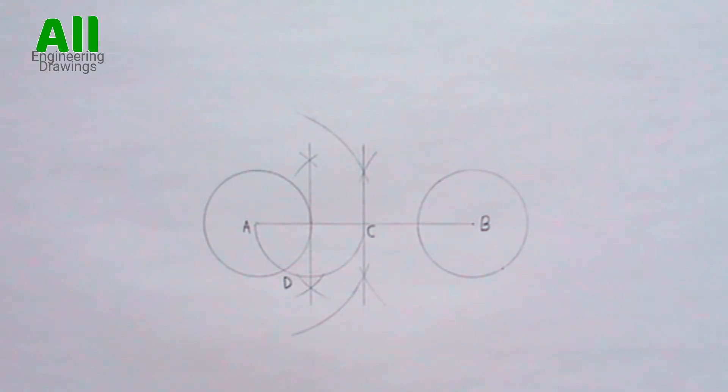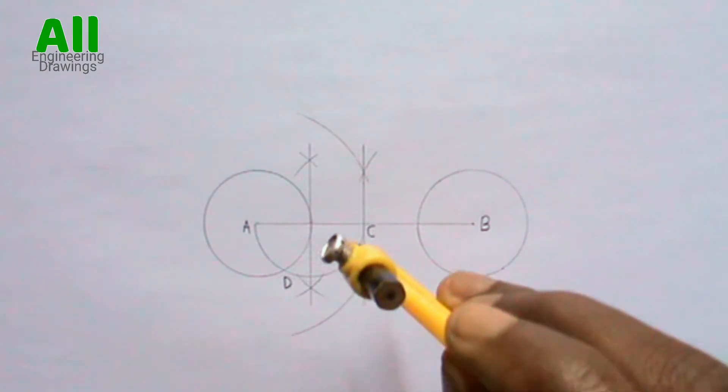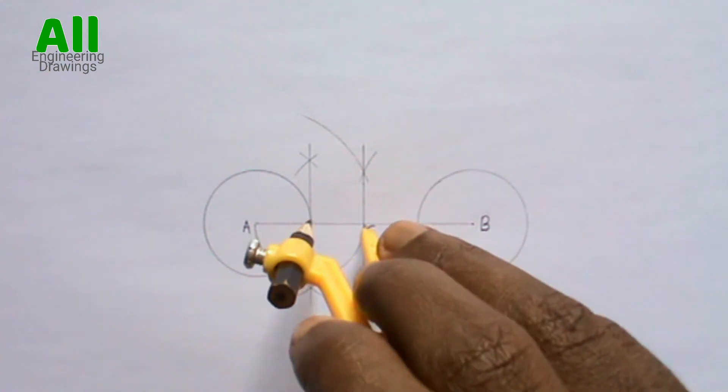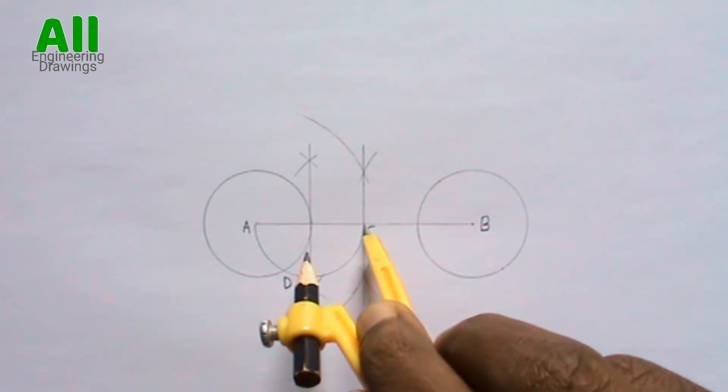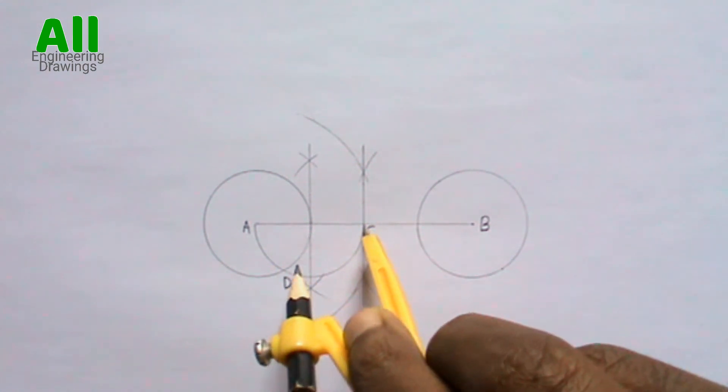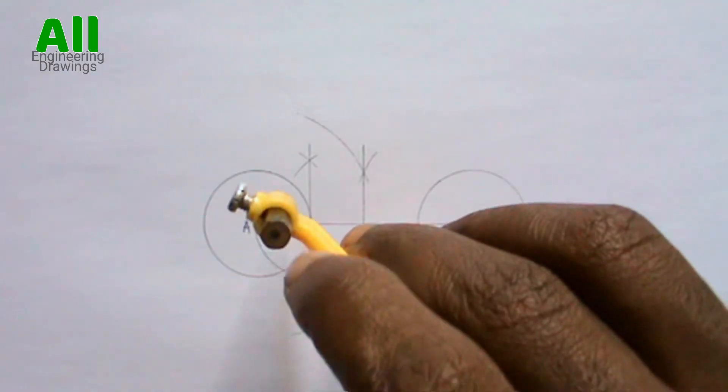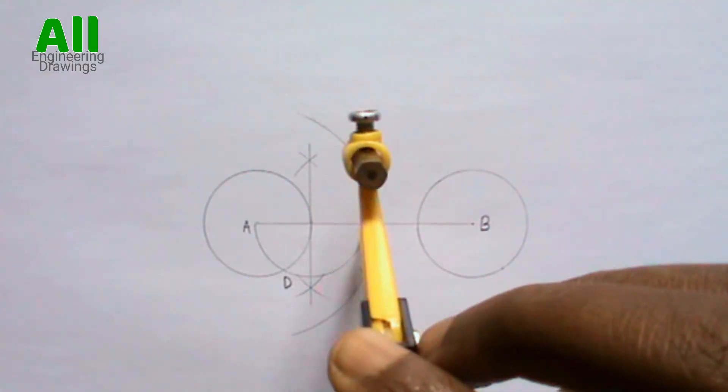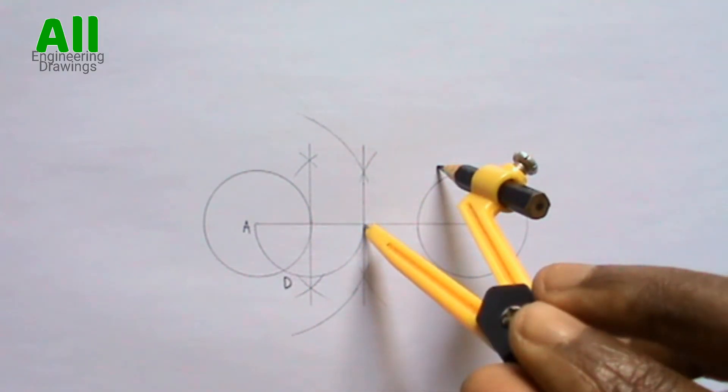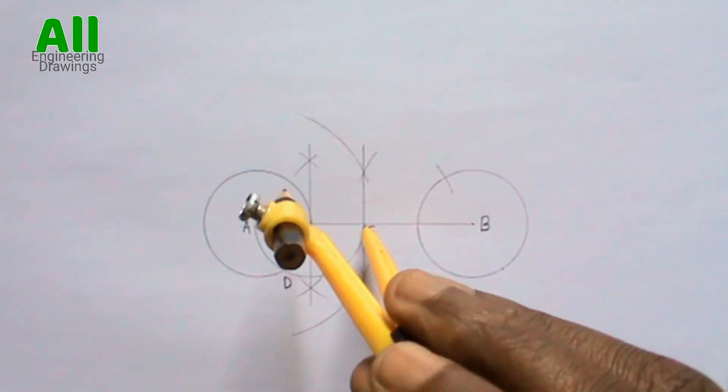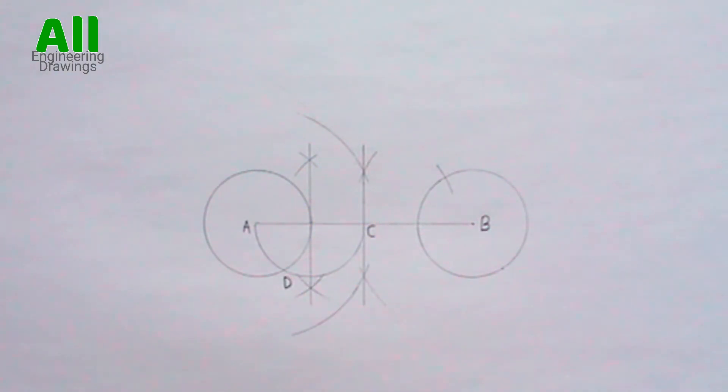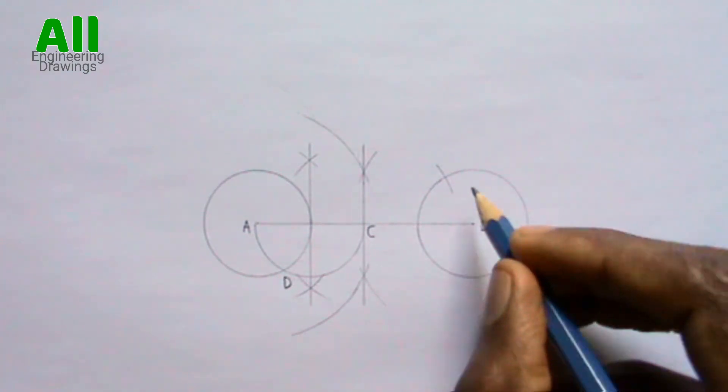Now, place your compass on point C. Then extend your compass in such a way that your pencil is on point D. Then cut an arc on the second circle. Label the point where the arc cuts through the second circle.